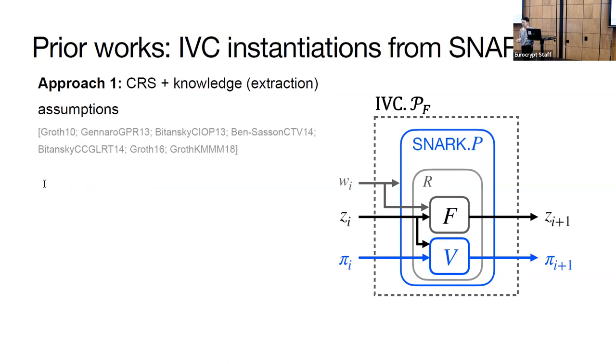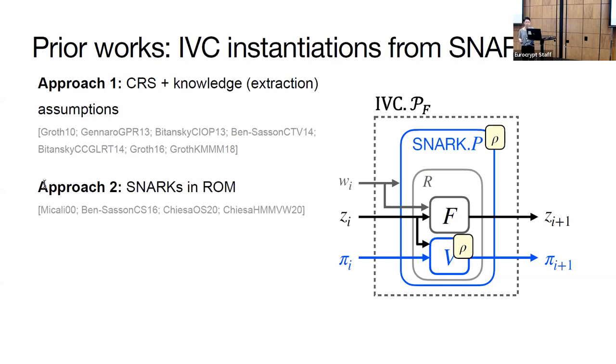There are two main approaches for building SNARKs for NP. The first is using SNARKs in the common reference string or CRS model. These require knowledge assumptions. The second approach is to use SNARKs in the random oracle model. This means that both the SNARK prover and the verifier have access to a random oracle. In the picture, this is the yellow box with RO in it. We write the SNARK's security proof in the random oracle model, but when we use the SNARK in the real world, we have to instantiate the random oracle with a hash function that we believe is secure enough.